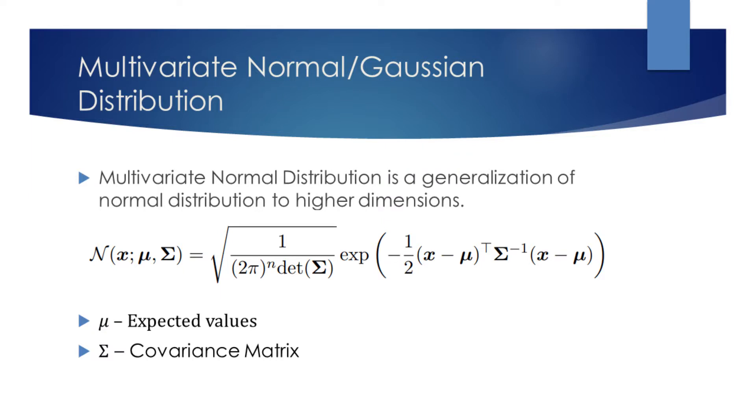Sigma is a covariance matrix. It determines the variance and covariance of the respective elements.